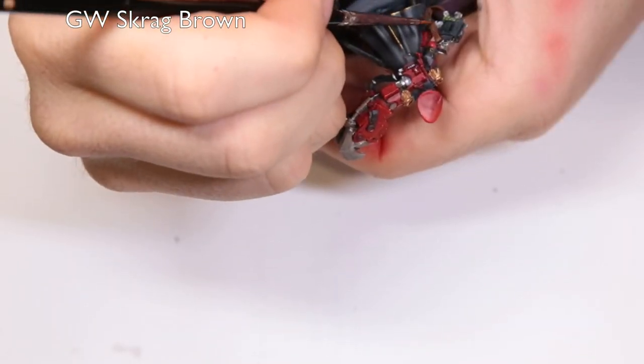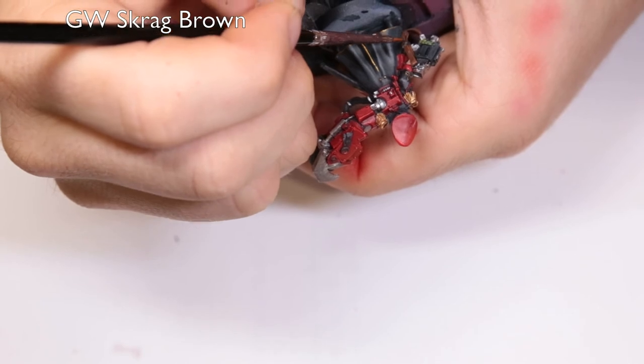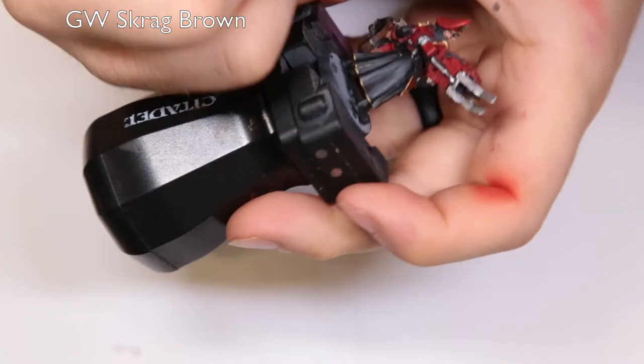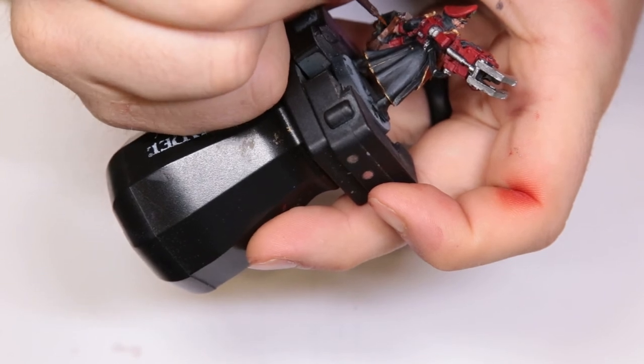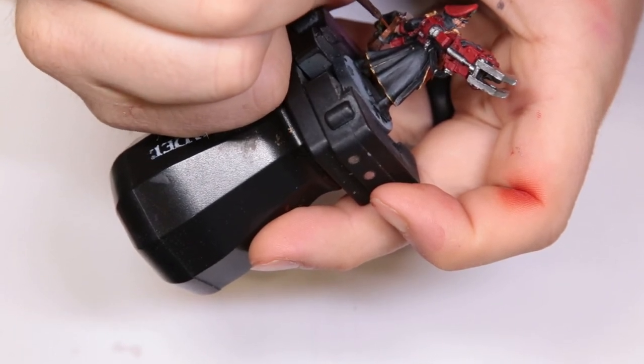Now we're using Skrag Brown to go ahead and highlight up all the leather. It's actually very close whenever it dries, so you don't have to be too worried about it being a stark highlight. You can just come through and wash it with an Agrax and you're solid all day long.